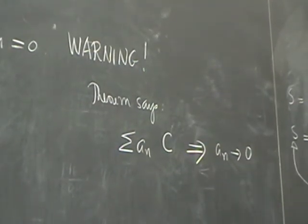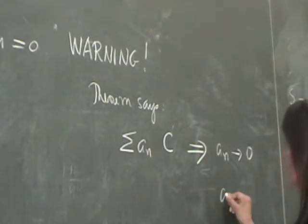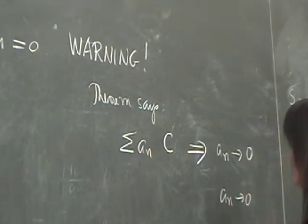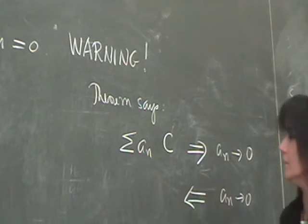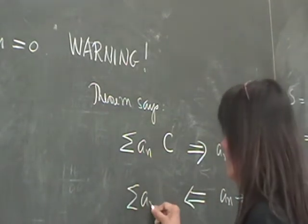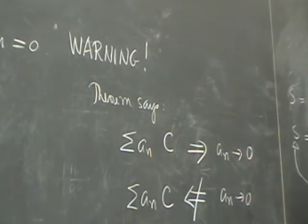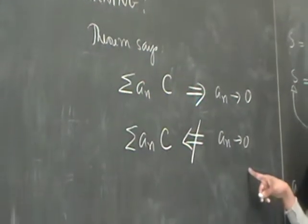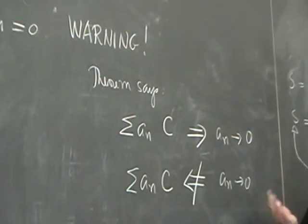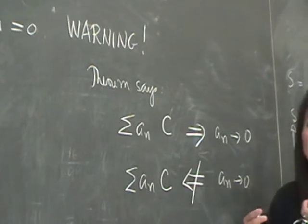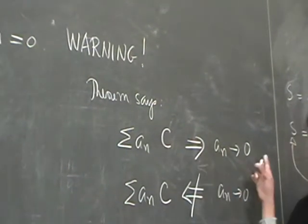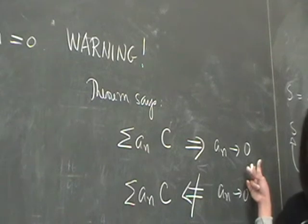Common mistake of students is when they see this A sub N goes to 0, they will conclude that the series is convergent. Did you understand this? Warning. All the theorem said is if you know that it is convergent, then you know that the nth term goes to 0.